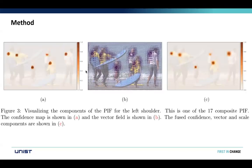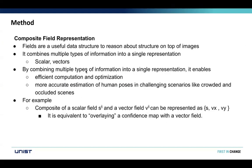Here you can see on the left, image A, which is the confidence of the left shoulder. In the middle, you can see the vector field showing the location of the left shoulder. When you put both of these together, you get image C, which is the composite field of scalars and vectors together.